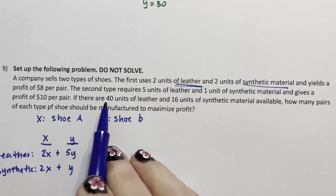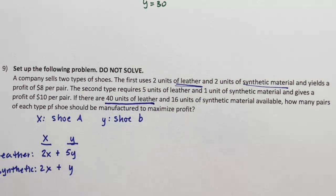And we see here that the limit on leather is 40. So all of this has to be less than or equal to 40. And the limit on synthetic is 16. So all of this has to be less than or equal to 16.